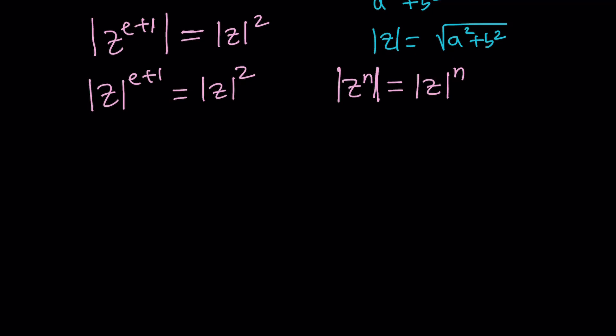This is going to become the absolute value of Z to the power e plus 1 equals the absolute value of Z to the second power. Notice that e is about 2.7, so e plus 1 is definitely greater than 2. Let's subtract the absolute value of Z squared from both sides. Now since this is bigger we can factor out the smaller one which is 2.